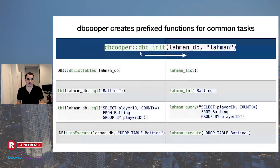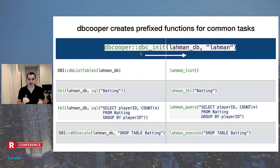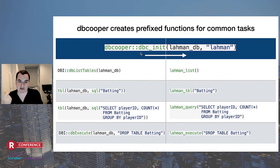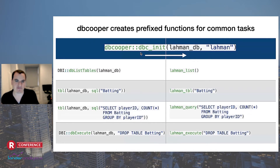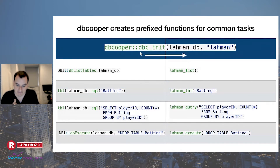We have four operations: listing tables, accessing one table, querying, and executing. What `dbc_init()` does is add four functions to your namespace: `lahman_list()` to list the tables, `lahman_tbl()` to access one table in dbplyr, `lahman_query()` to run a SQL query, and `lahman_execute()`. Once you've run `dbc_init()`, you're no longer working with the connection object — it's stored and managed globally while you use these functions to access the database.